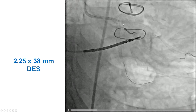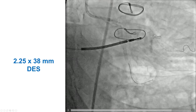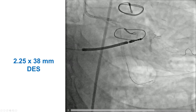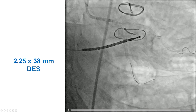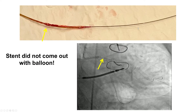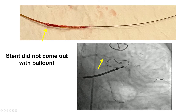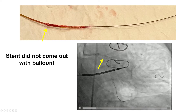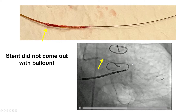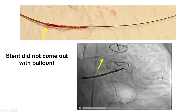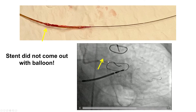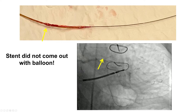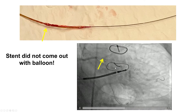In this particular case, the plan was to treat the in-stent restenosis with another drug-eluting stent. A 2.5 by 38 mm stent was attempted to be delivered. However, the stent could not be delivered, and during attempts to withdraw it back into the guide, the balloon came back but the stent did not.